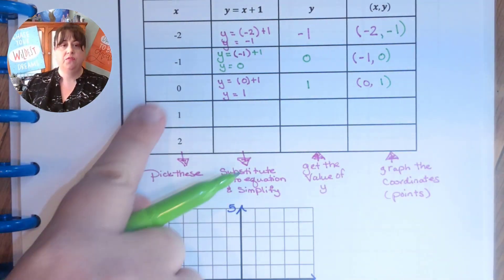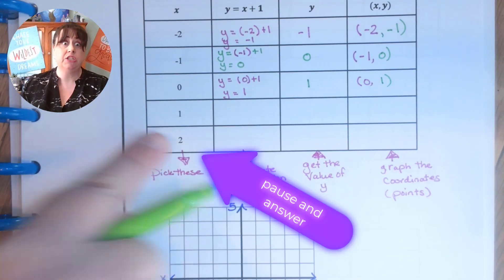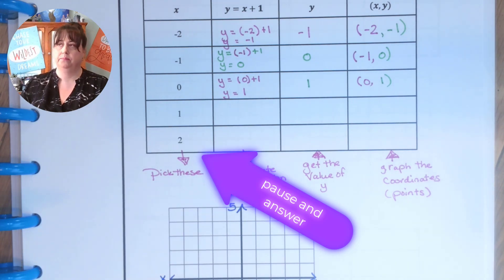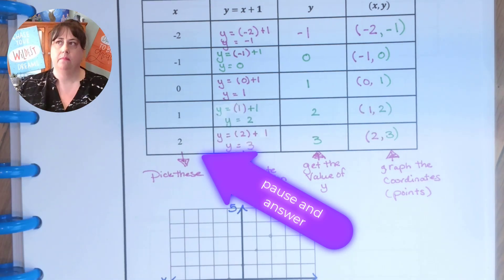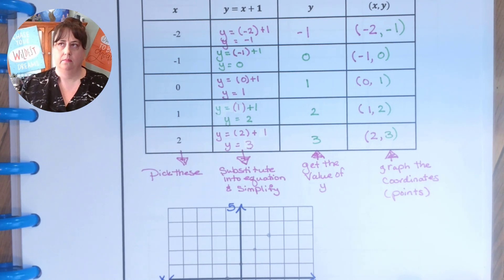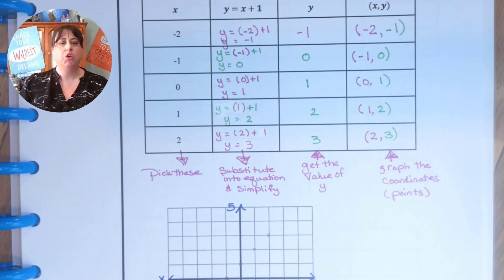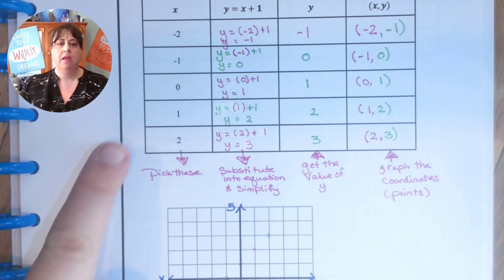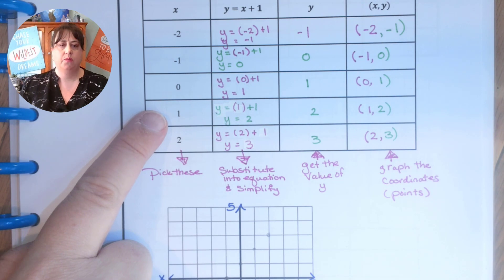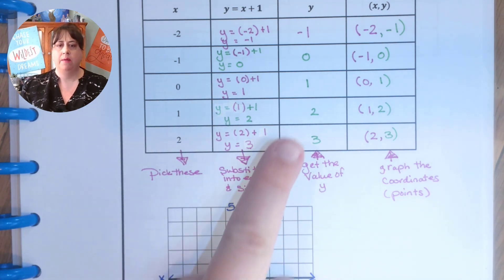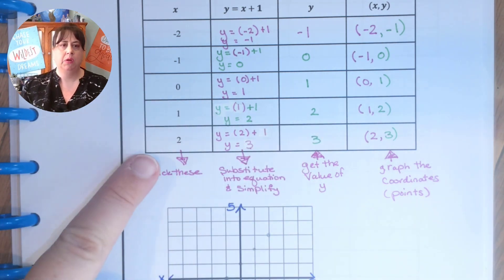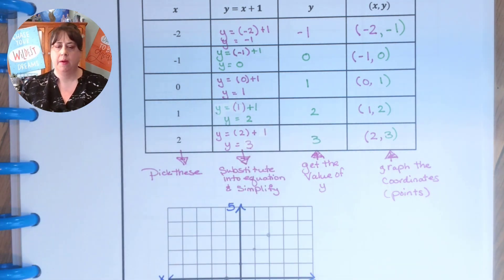I want you to finish the next two on your own. Okay, check your work. You should have gotten that when x was one, y was two, and when x was two, y was three.